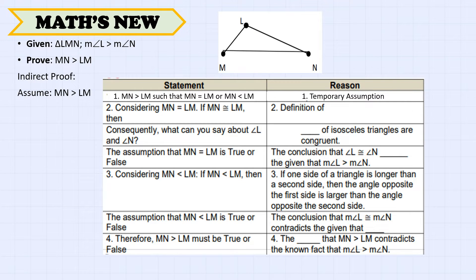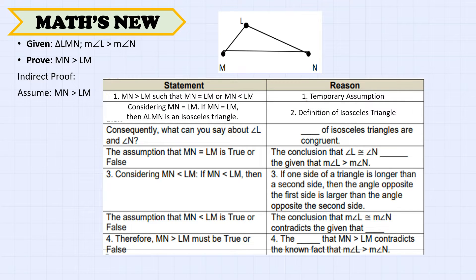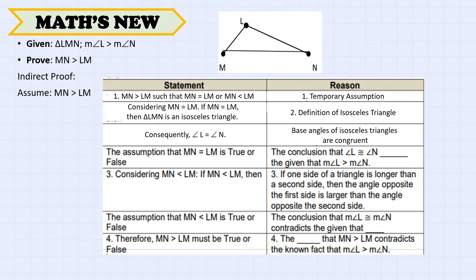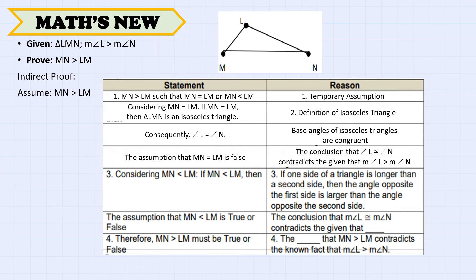Our temporary assumption is that MN is not greater than LM, meaning either MN equals LM or MN is less than LM. Considering MN congruent to LM: triangle LMN would be isosceles, so angle L equals angle N. This assumption is false because the conclusion that angle L is congruent to angle N contradicts the given that the measure of angle L is greater than the measure of angle N.